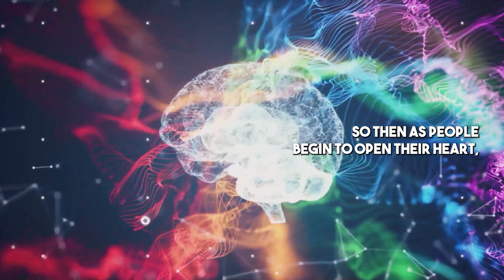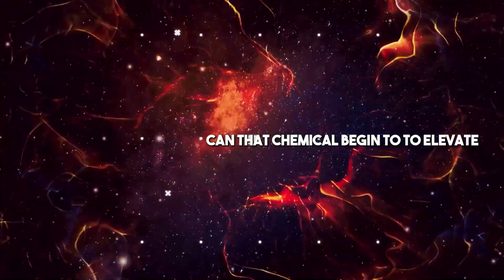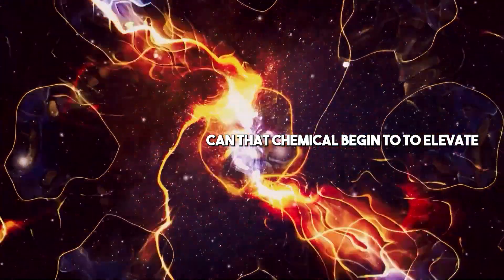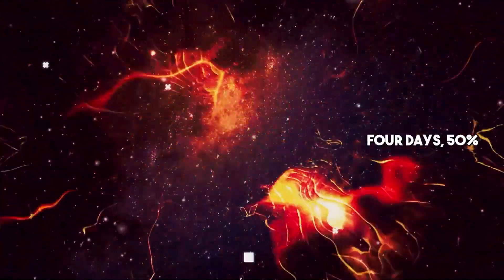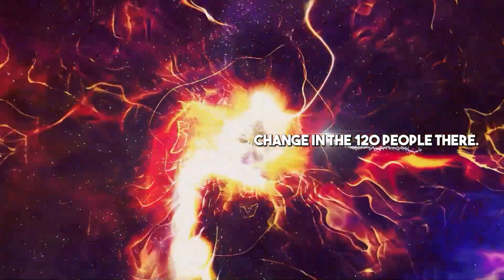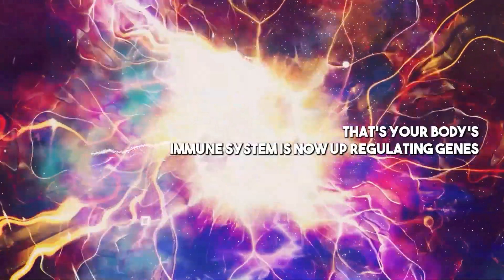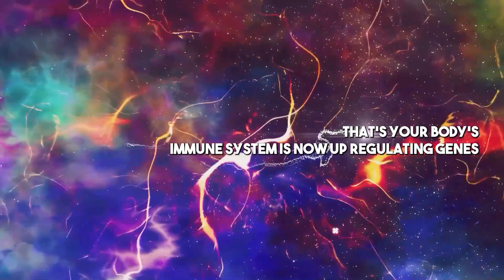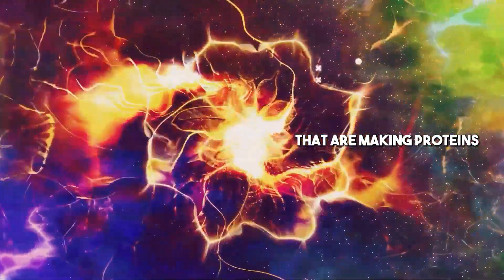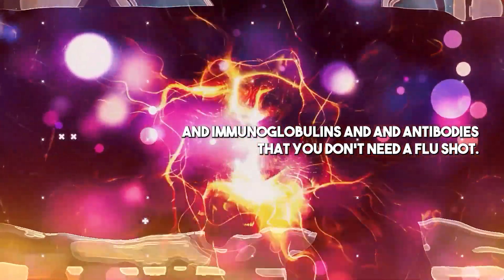As people begin to open their heart, that chemical begins to elevate. Four days, 50% change in 120 people. Their IGA levels went up 50% in four days. Your body's immune system is now upregulating genes that are making proteins and immunoglobulins and antibodies. You don't need a flu shot.